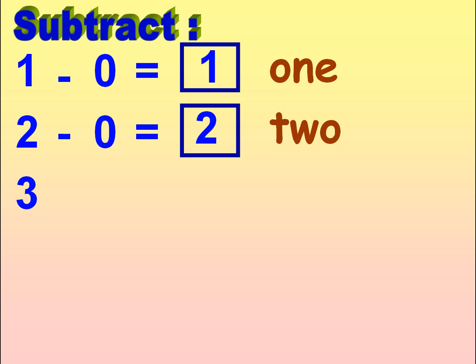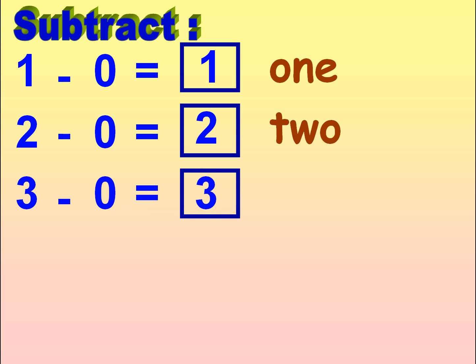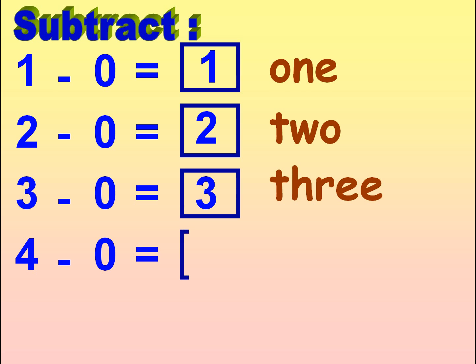3 minus 0 is equal to 3. T-H-R-E-E, 3. 4 minus 0 is equal to 4. F-O-U-R, 4.